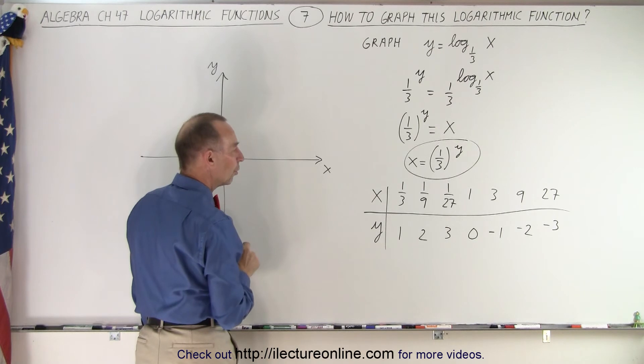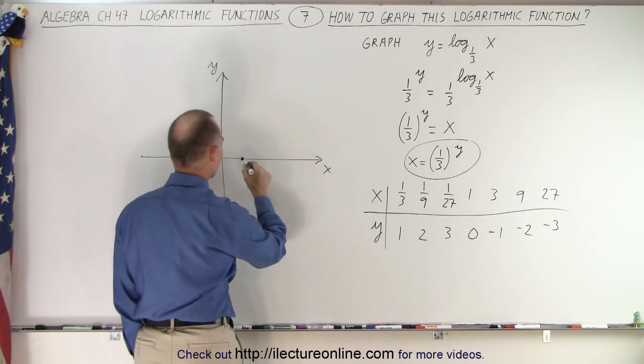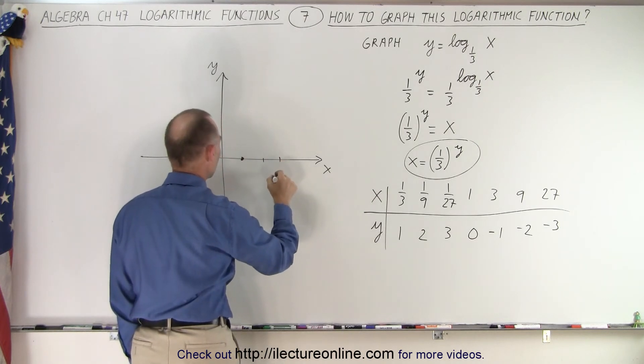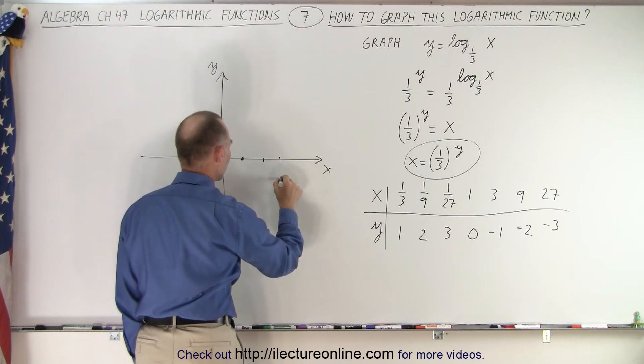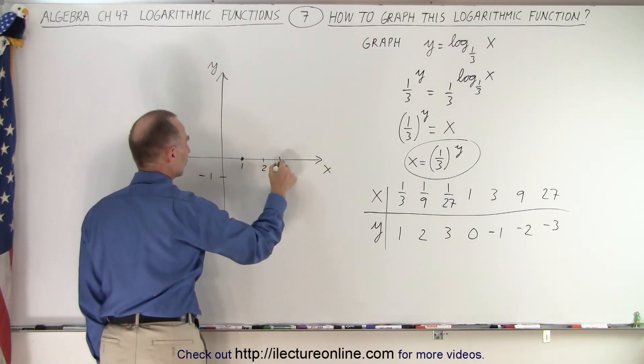When x equals 3, y equals negative 1. So that's 1, 2, 3, y is negative 1. That's going to be over here. This is negative 1, this is 1, this is 2, this is 3.